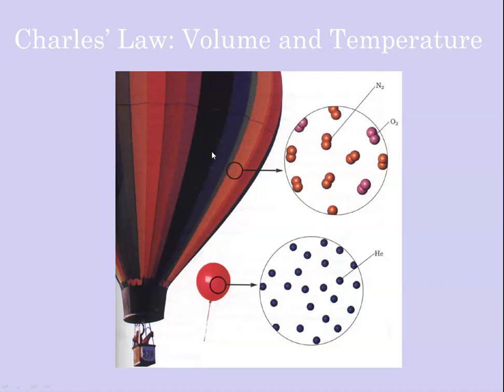In order to come back down again what they do is they lift the flap at the top. That allows the warm air to expand out, cold air would then come rushing in and the density would increase and the balloon would come down. So the way that they control the altitude in a hot air balloon is really taking advantage of Charles's law.